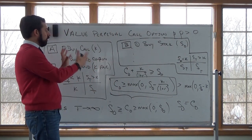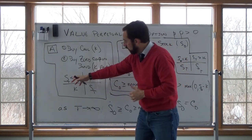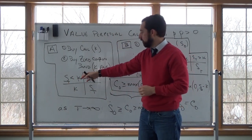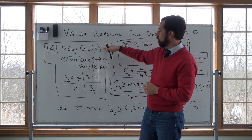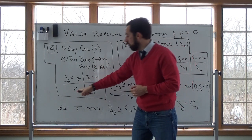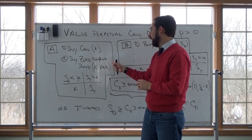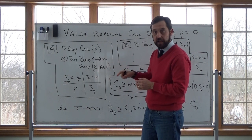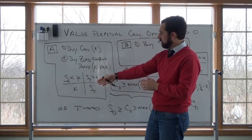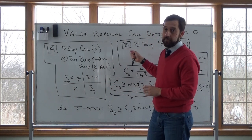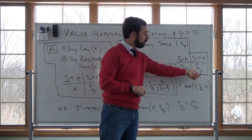We look at the payoff on these two portfolios at expiration of the option. If the stock price at expiration — big T is expiration — is less than the strike, then Portfolio A pays K: the call expires worthless and we receive the face value of the zero-coupon bond, which is K. If the stock price at expiration is greater than K, we receive K from the bond, and the call pays S(T) minus K, so S(T) minus K plus K gives us S(T). The payoff on Portfolio B is just S(T) in both states.